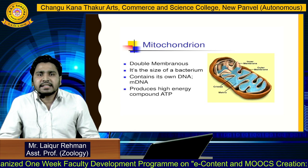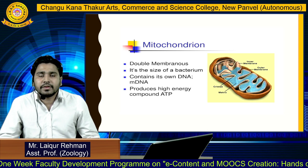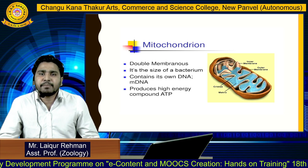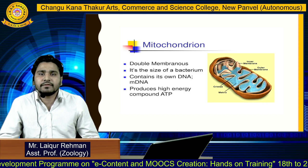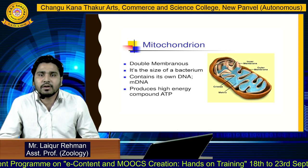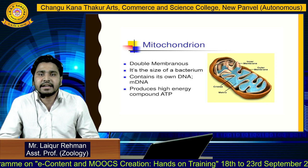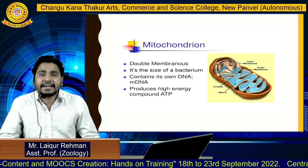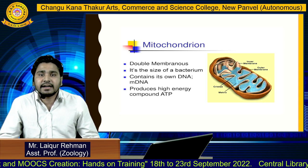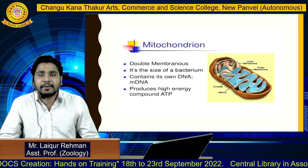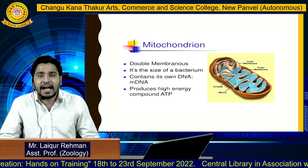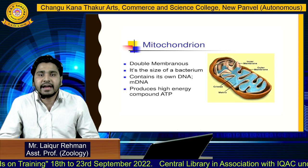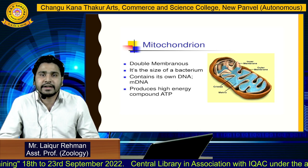The mitochondrion, or mitochondria, is basically the powerhouse of the cell — it generates energy. It is a double-membraned organelle about the same size as a bacterium. It contains its own DNA (mitochondrial DNA) and produces a high-energy compound called ATP — adenosine triphosphate.